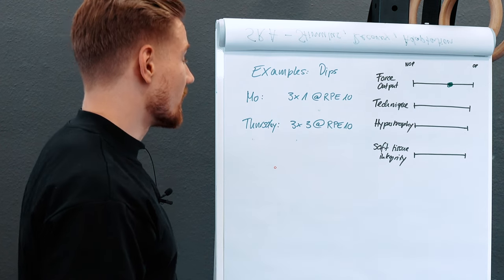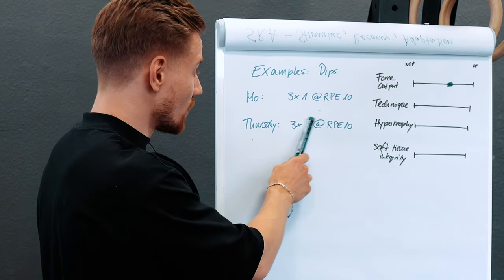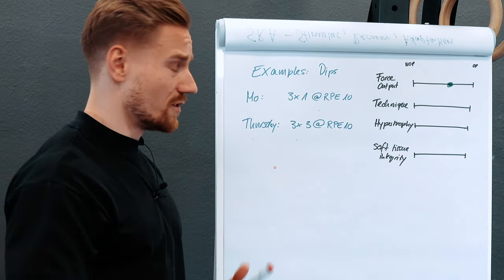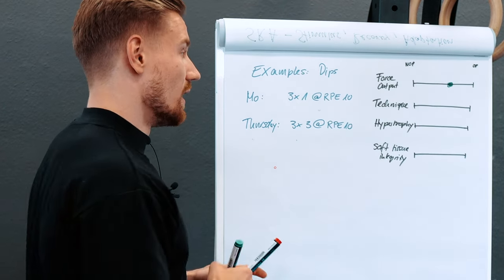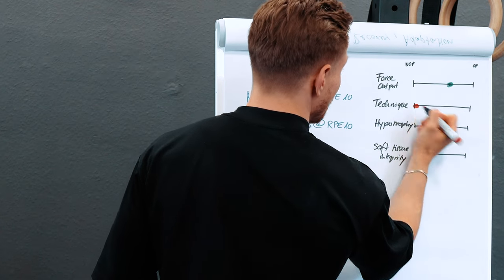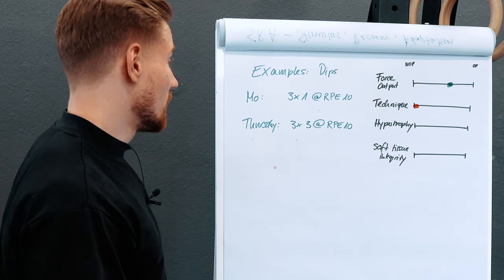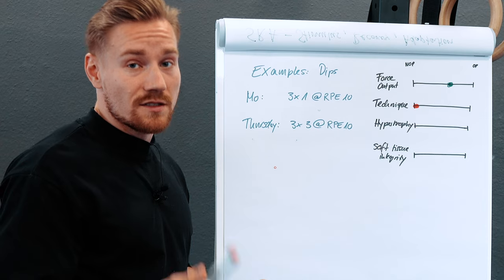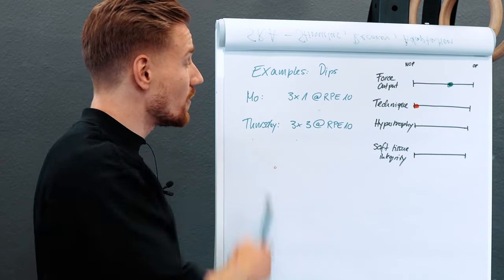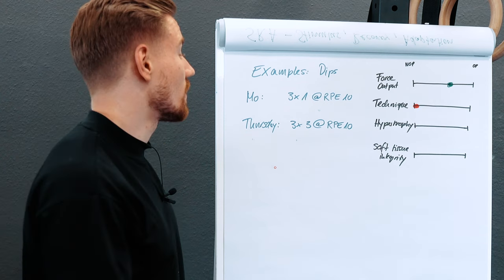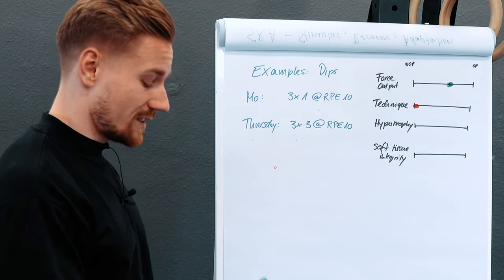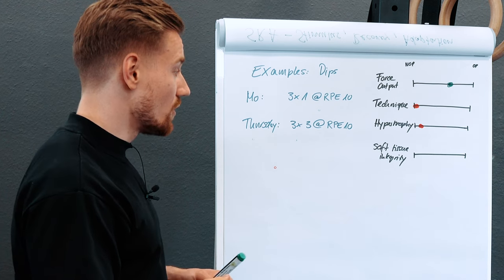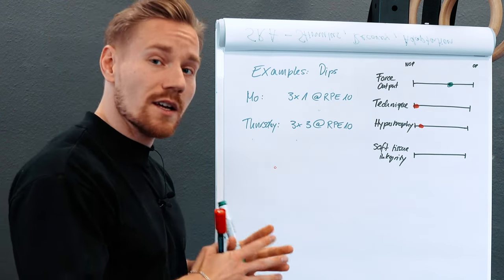For technique, things look different. We only have two sessions per week totaling nine and three — 12 repetitions over the whole week, all super heavy. There's no chance to really focus on technique, so we're definitely in the 'not optimal' range. For hypertrophy, we're training at muscular failure, which is good, but we're doing very little total workload and very little volume with just six sets — so also more towards the 'not optimal' end.